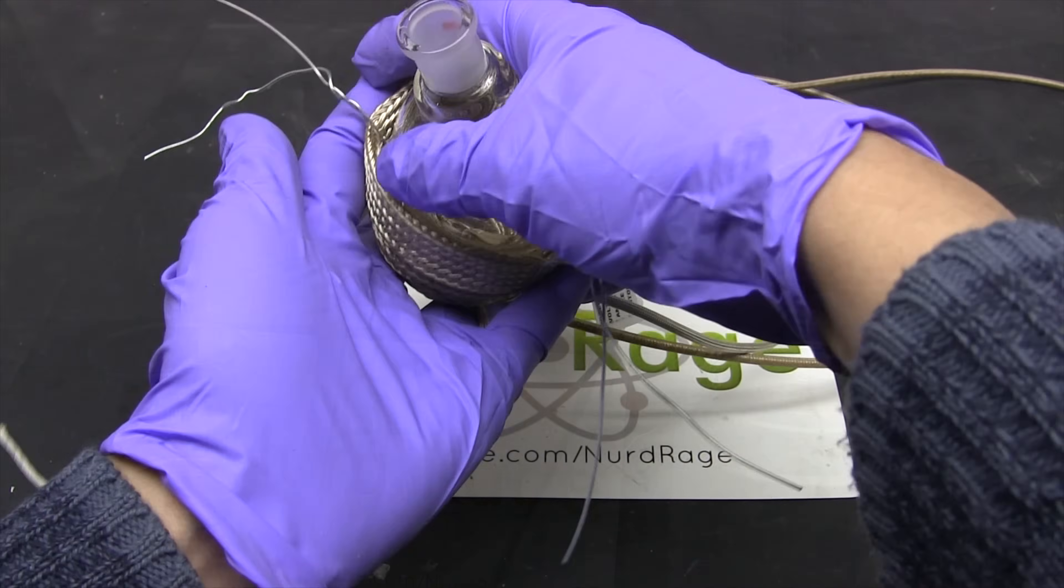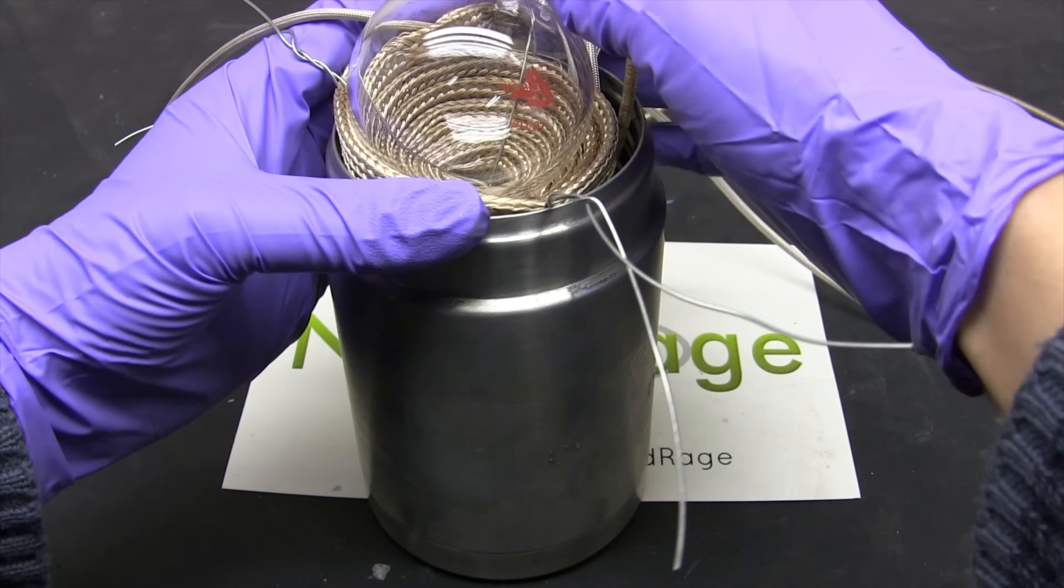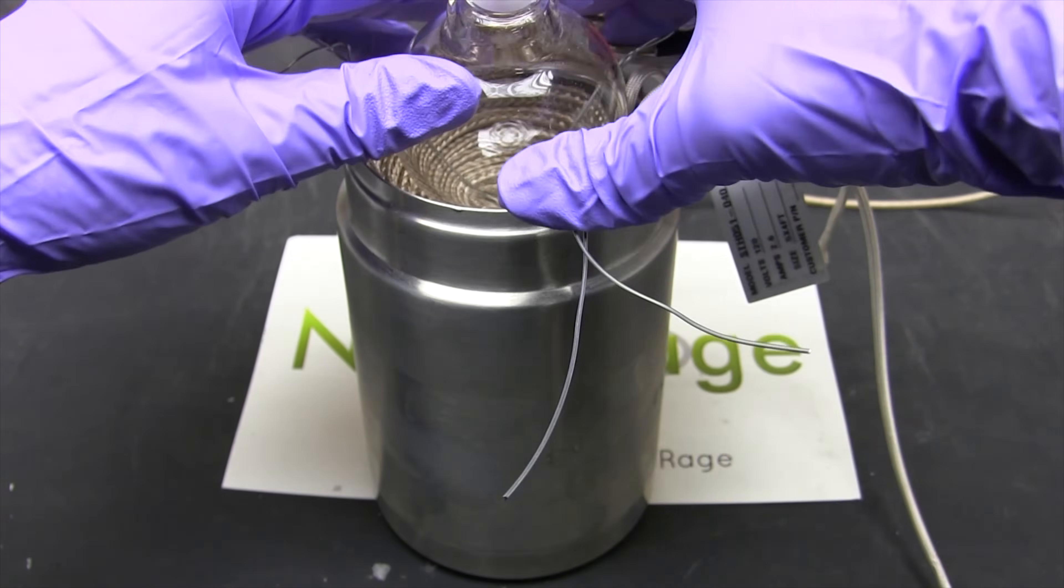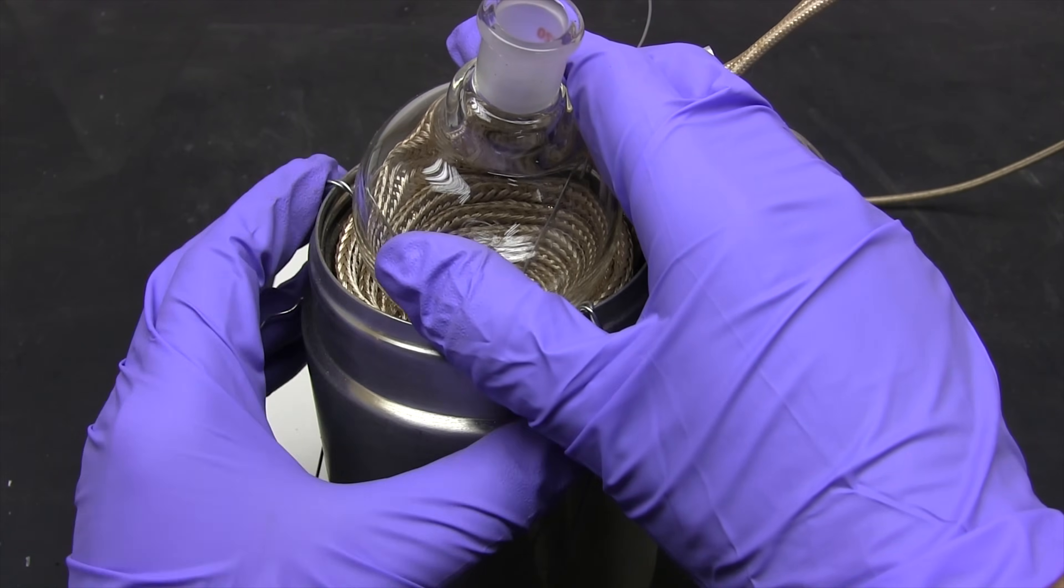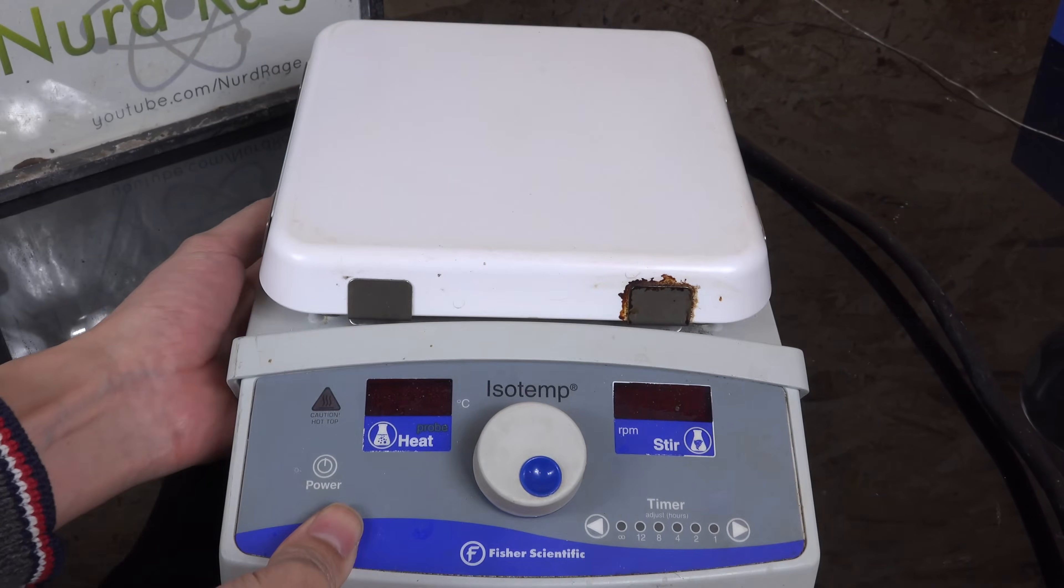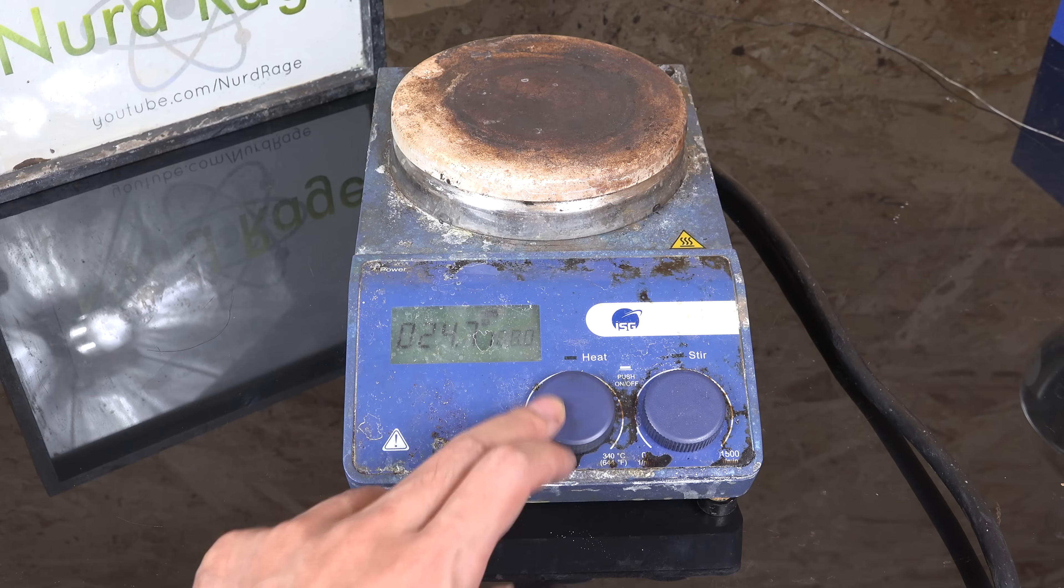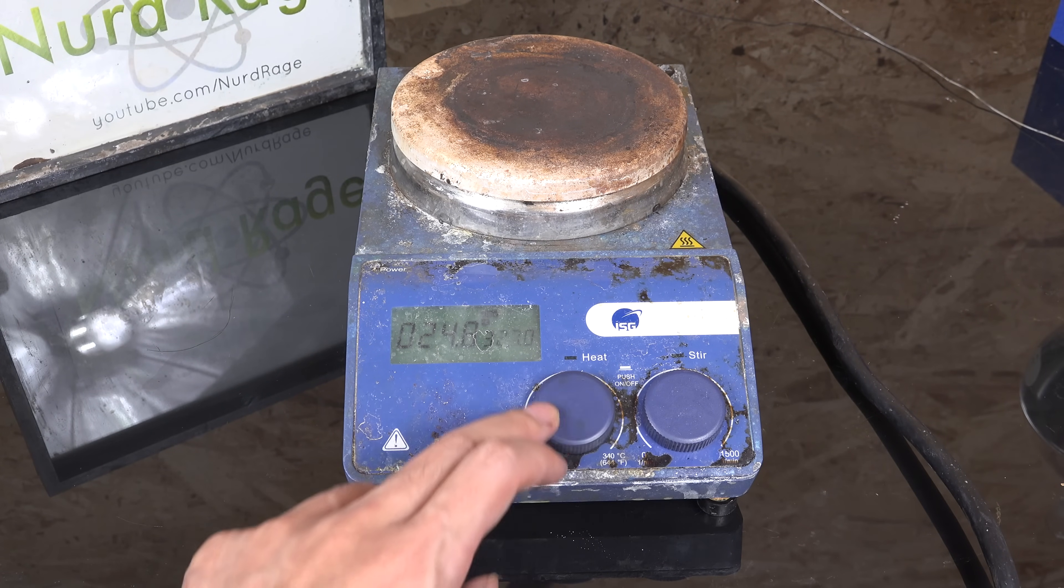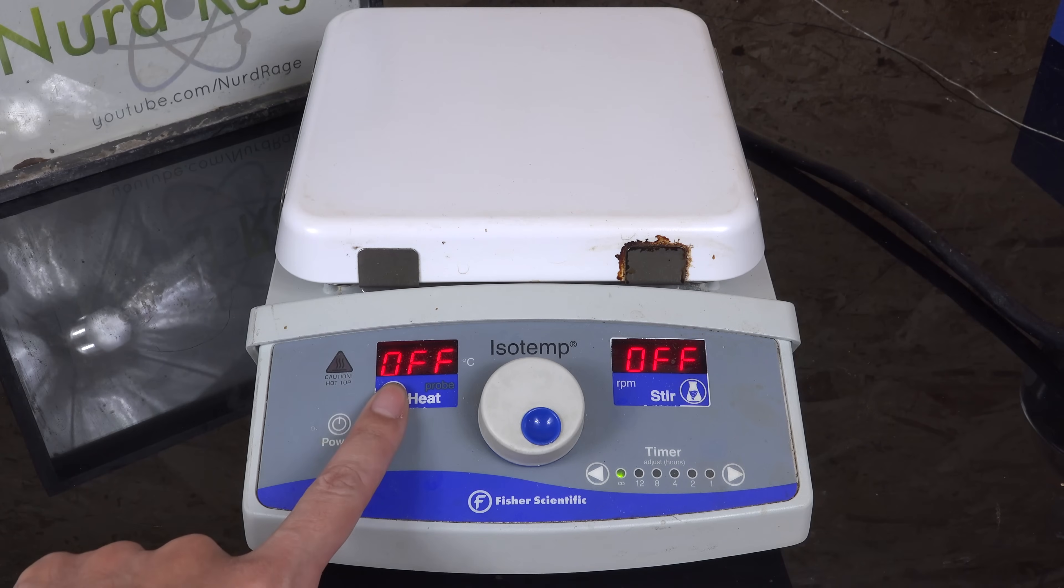First is the heat source. In my previous video we used a high temperature heating mantle that we built ourselves out of heating tape and a thermos. It worked well but I have since upgraded to a ceramic hot plate stirrer. I can't use the standard aluminum hot plate stirrer because those are limited to about 300 celsius or else the aluminum starts to soften. But ceramic hot plates can go much higher and this one can reach 540 celsius, well past the boiling point of sulfuric acid at 337 degrees celsius.